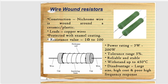For wire wound resistors, the construction includes nichrome wire wound around a ceramic or plastic core, with copper wire leads protected with enamel coating. The resistance value is between 1 ohm and 100 ohm. The power rating is from 3 watts to 200 watts — used for higher power ratings. The tolerance range is 5%. It is reliable and stable, withstanding up to 450 degrees centigrade. Disadvantages include larger size, high cost, and poor high-frequency response.